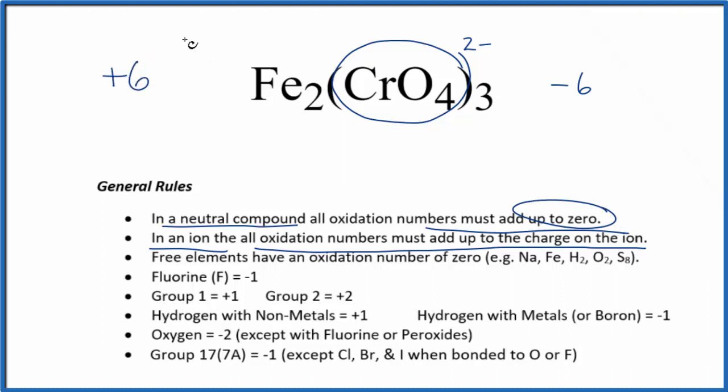Two times something gives us plus six. Two times plus three will give us our plus six. So the oxidation number on each iron in Fe₂(CrO₄)₃ is going to be plus three.